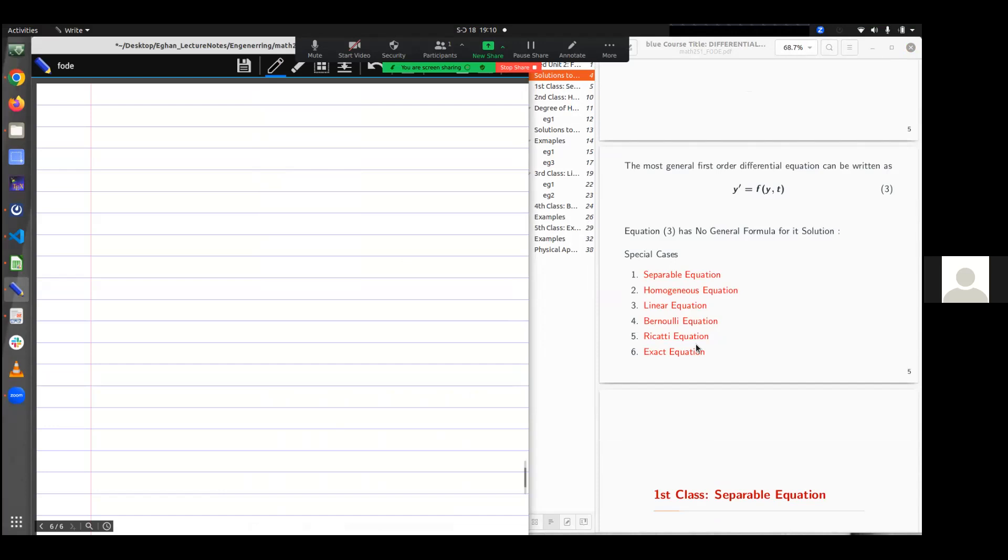Now let's consider equation 3. Equation 3 is a uniform or standard first-order differential equation. It says equation 3 has no general way of solving it, but then we can solve it if we know the class of the first-order.